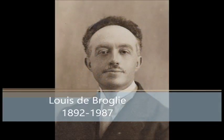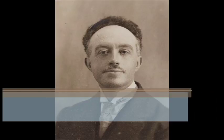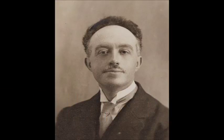French scientist De Broglie told us that every moving particle has a wave character as well as a particle nature. The wavelength of a particle can be calculated by dividing Planck's constant by the product of its mass and the velocity by which it's moving.